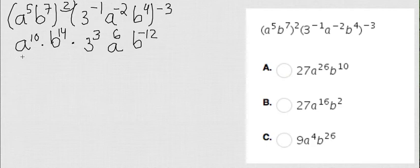Now, since I have the same base, for example, with this a, I'm going to go ahead and add the exponents. So 10 plus 6 is 16. Then b14 and b-12, they have the same base. So 14 minus 12 is actually b2.